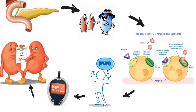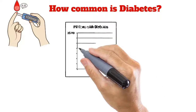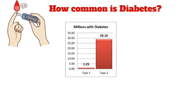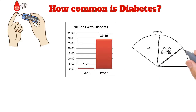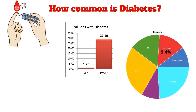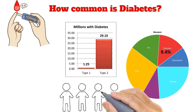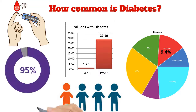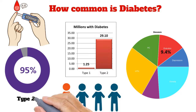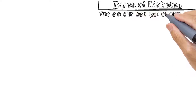How common is diabetes? 30.3 million people in the United States, or 9.4% of the population, had diabetes. More than one in four of them didn't know they had the disease. Diabetes affects one in four people over the age of 65, and about 95% of cases in adults are type 2 diabetes.